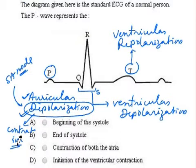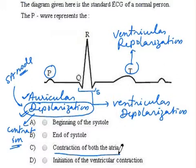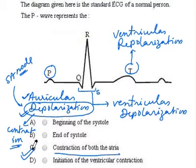That means P wave is representing contraction of both the auricles. So option C, which says P wave is the representation of contraction of both the atria, is the correct answer.